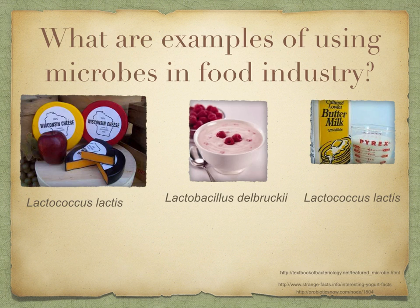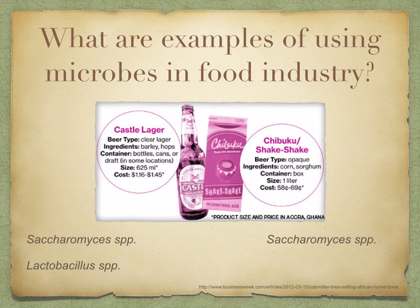Examples that you've come across of using microbes in the food industry include making cheese, making yogurt, and making buttermilk. These are the different bacteria, or microorganisms, that are used. Saccharomyces and Lactobacillus are used in making clear and opaque beer as well.